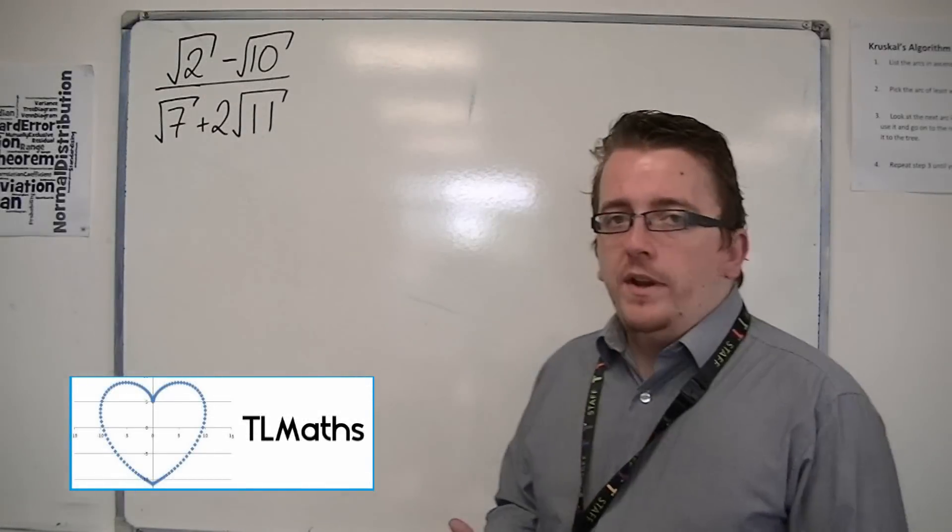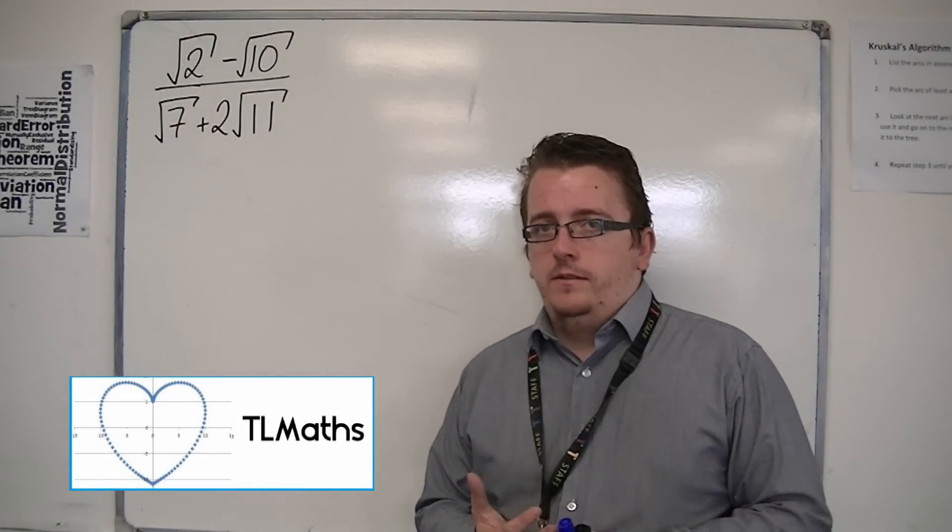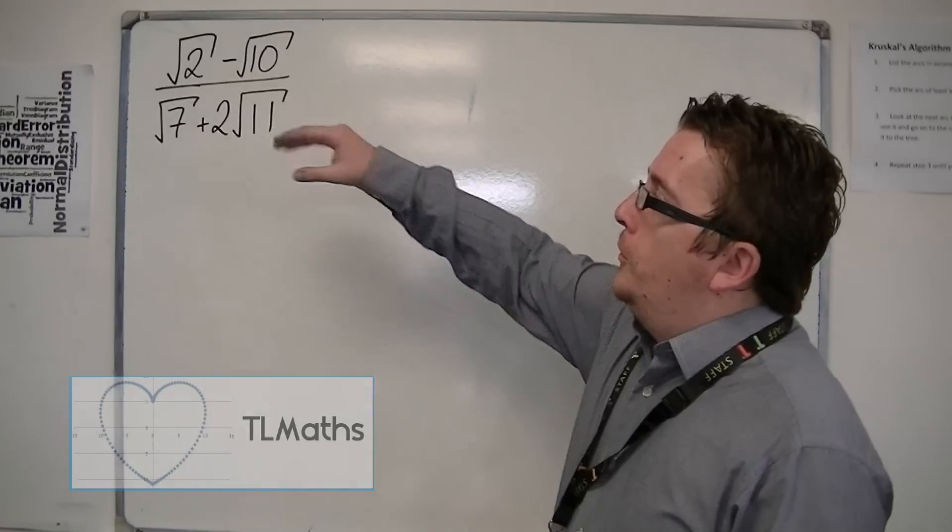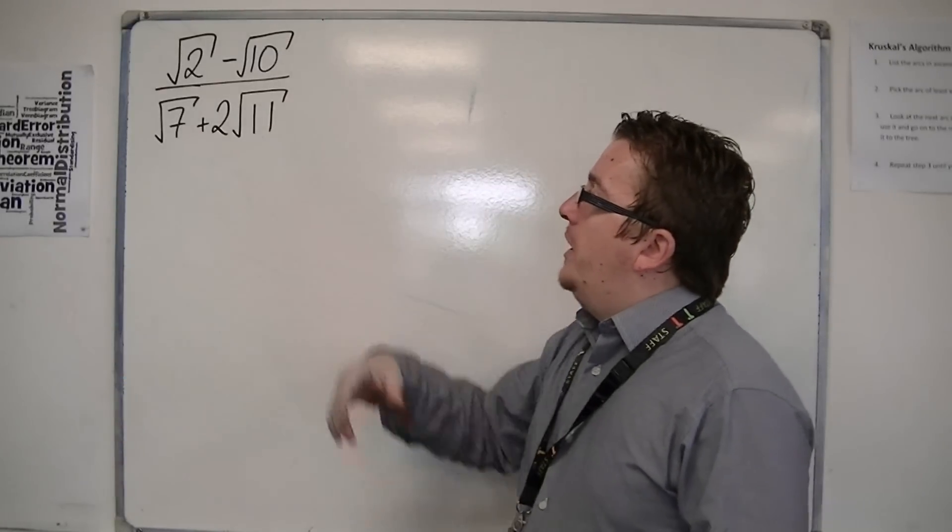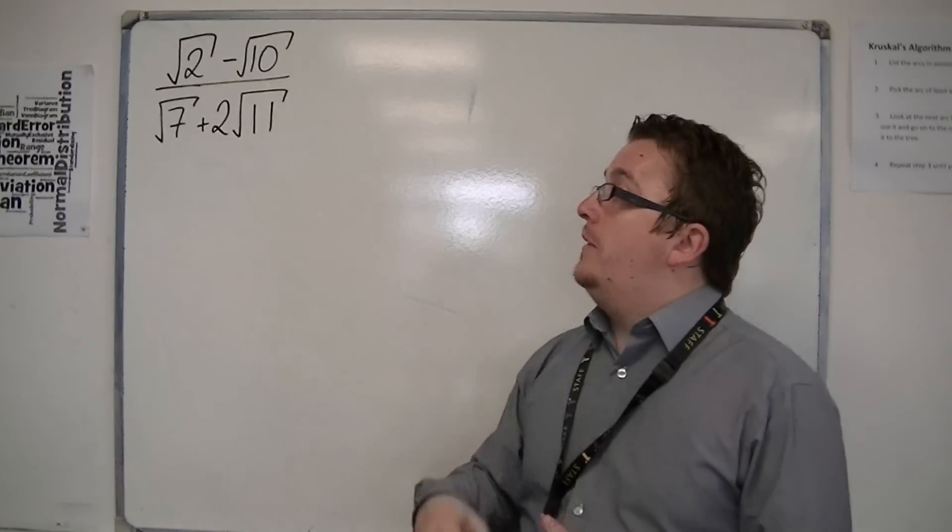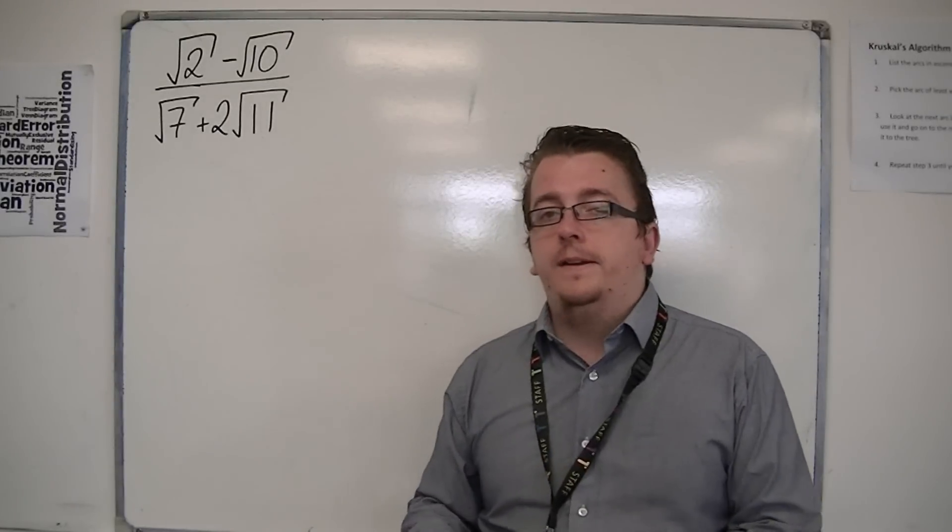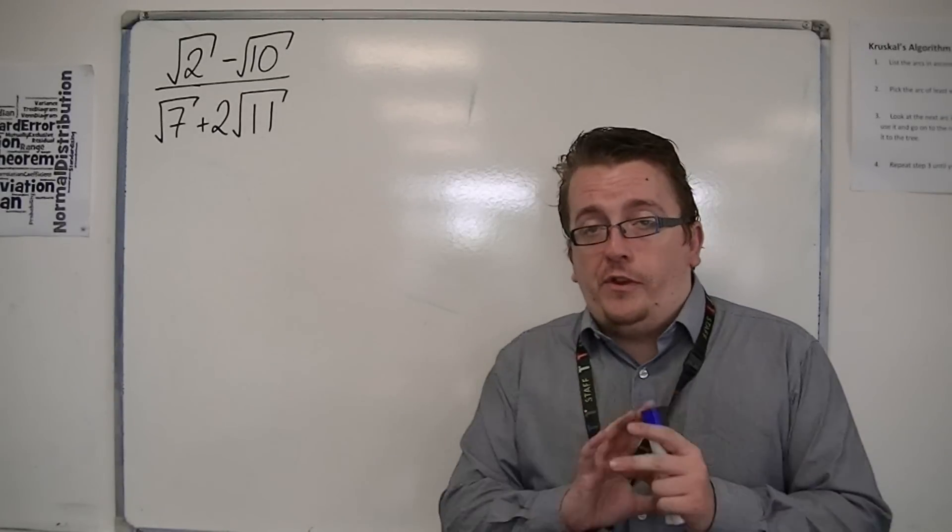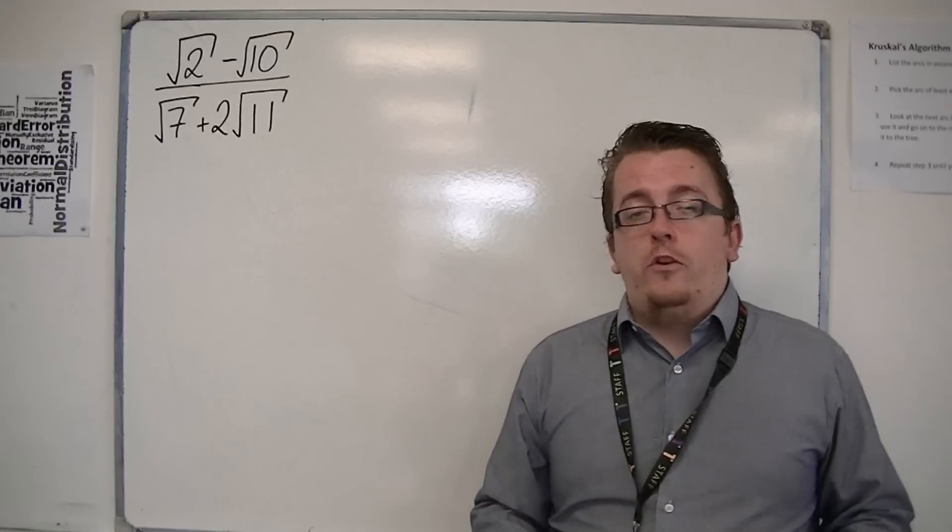Right, in this example, we're going to look at an even trickier problem that looks like this. You've got root 2 take away root 10 over root 7 plus 2 root 11. There are surds everywhere here, but don't worry.